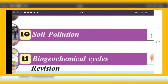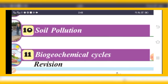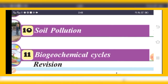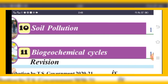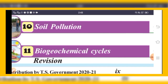Pollution is of many types — sound pollution, land pollution, which is also called soil pollution, water pollution, and thermal pollution. Among these, the tenth chapter focuses specifically on land pollution or soil pollution as given in our textbook, which we will study deeply.